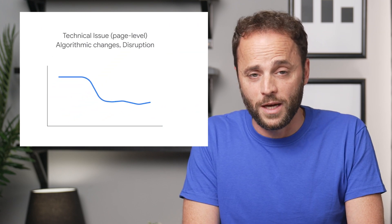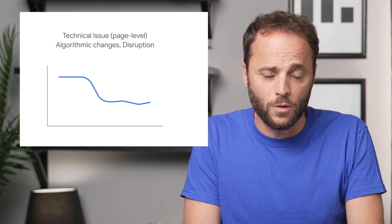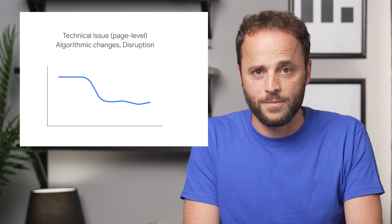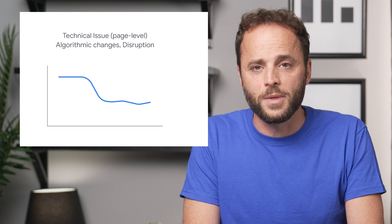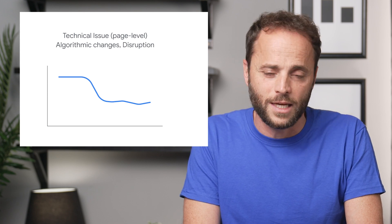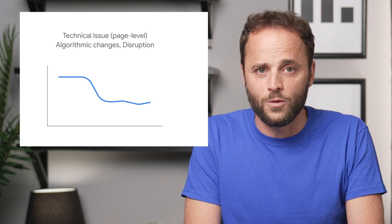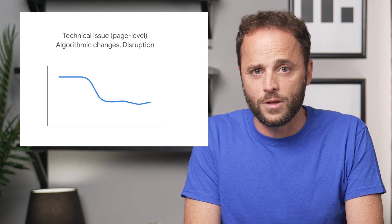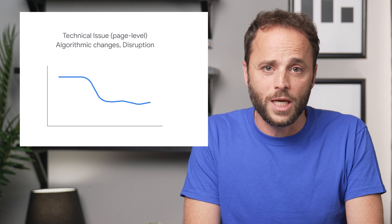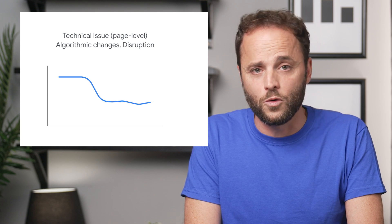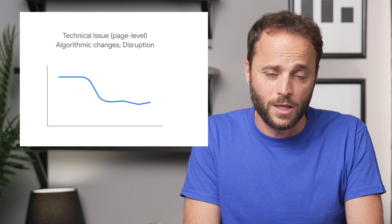In the bottom left chart, you'll see page-level technical issues. For example, an unintended no-index tag. Since this issue depends on Google crawling the page, it will be a slower drop in traffic than site-level issues. Also, Google is always improving how it evaluates content and updating its algorithm accordingly. For instance, core updates may change how some pages perform in Google search over time. Usually, this would not be a sharp decline.